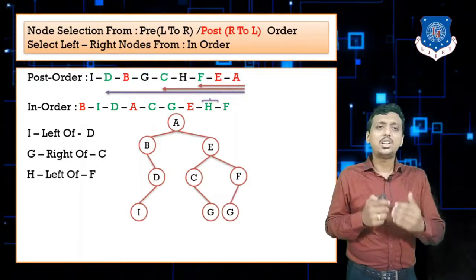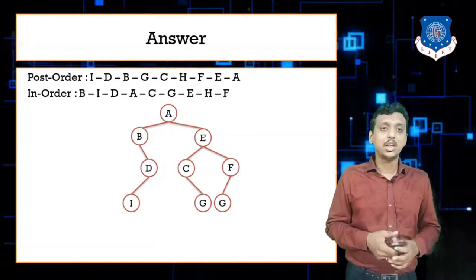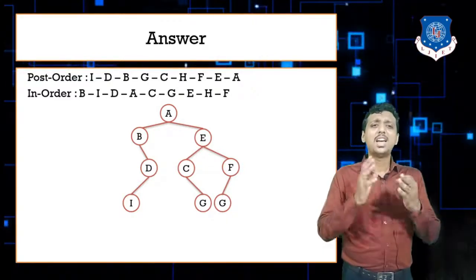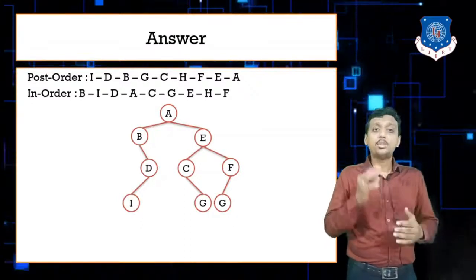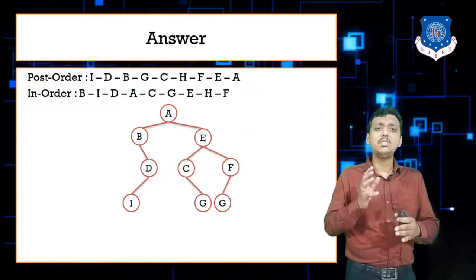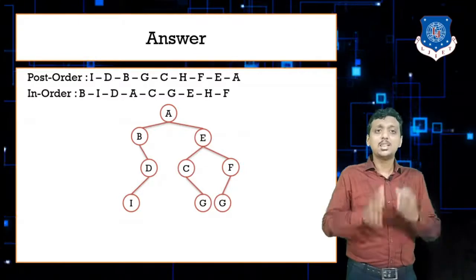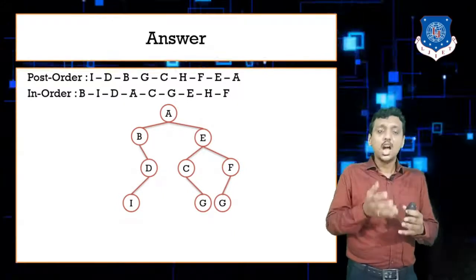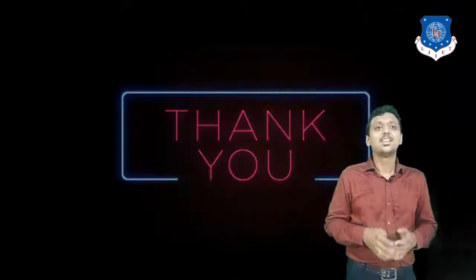Every node has now been selected and placed. Our final tree is: root A, with B and E as children. B has I and D on its right; E has C and G on its left and H and F on its right. That concludes how to build a binary tree from traversal orders — in-order with pre-order, or in-order with post-order. Thank you so much.